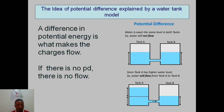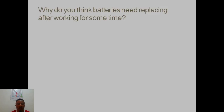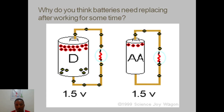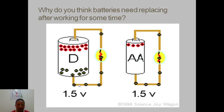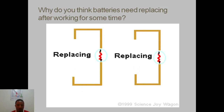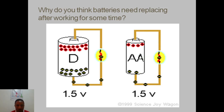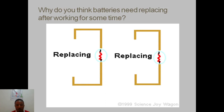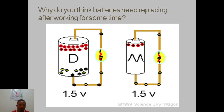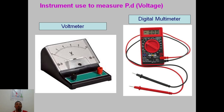A neutral point — if there is no potential difference there will be no flow of charge. This also explains why batteries need to be replaced after working for some time. The charges flow from one end back to the other until everything is neutral. Once it's neutral, the battery needs to be replaced. Charge can only flow if the battery is not neutral.